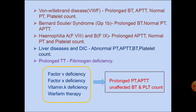In DIC — disseminated intravascular coagulation, which is a consumptive coagulopathy — coagulation factors and platelets are consumed and disseminated clots form. Hence, there is abnormal PT, APTT, bleeding time, and platelet count.